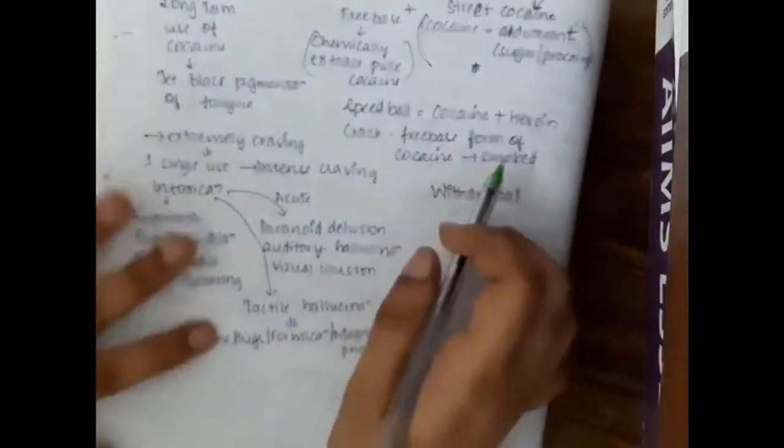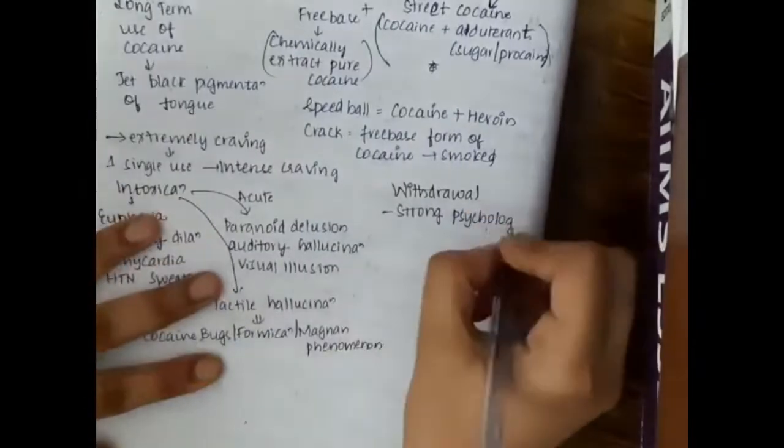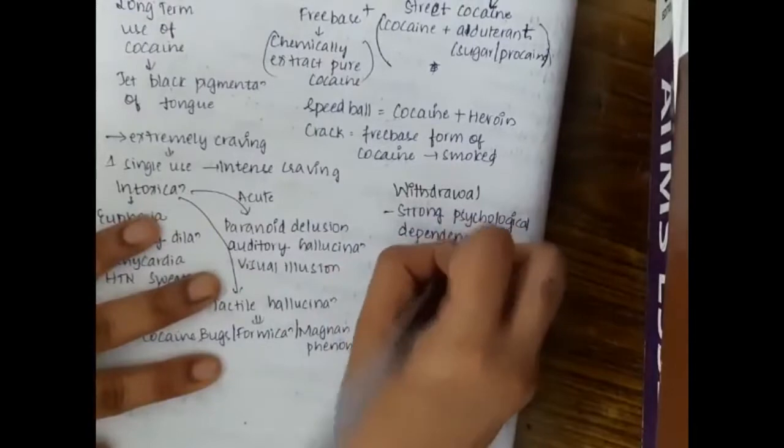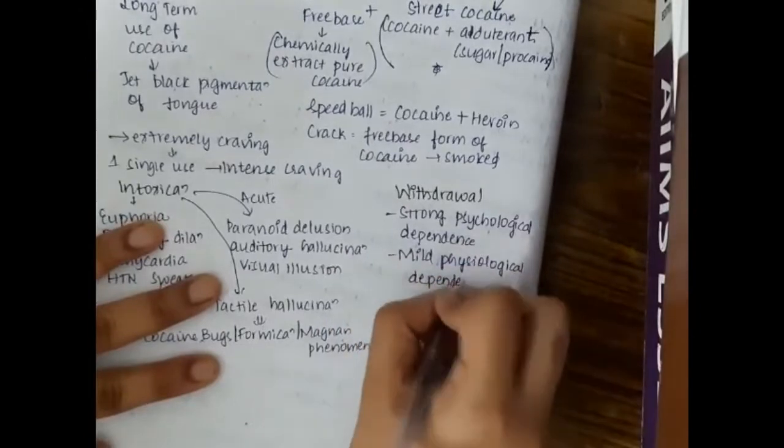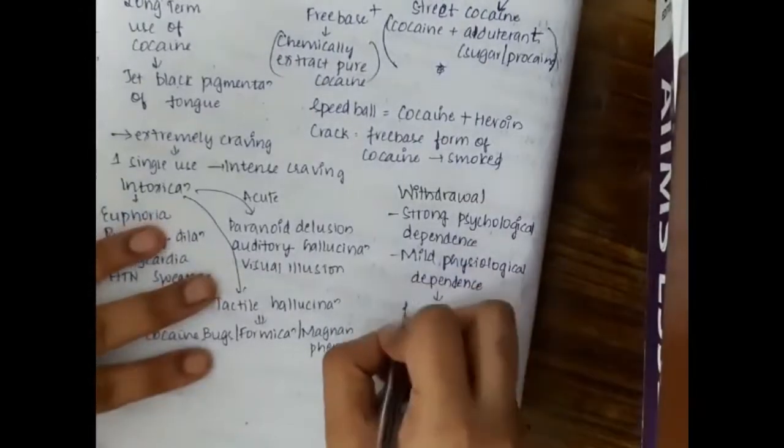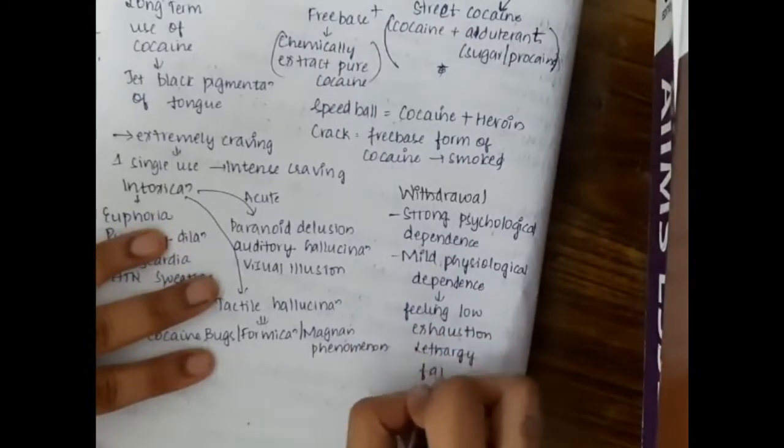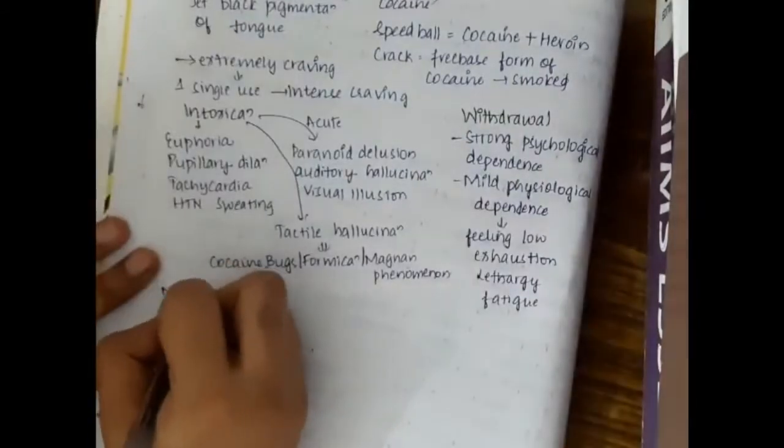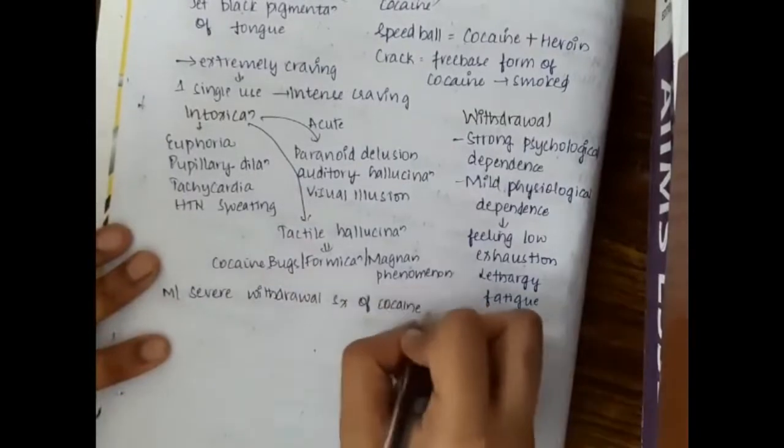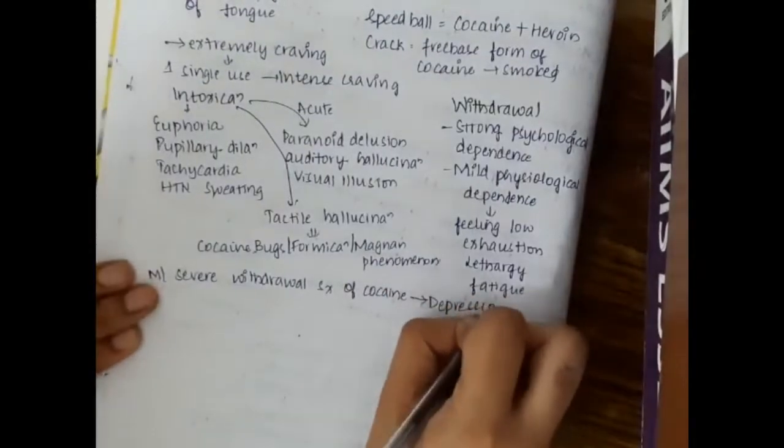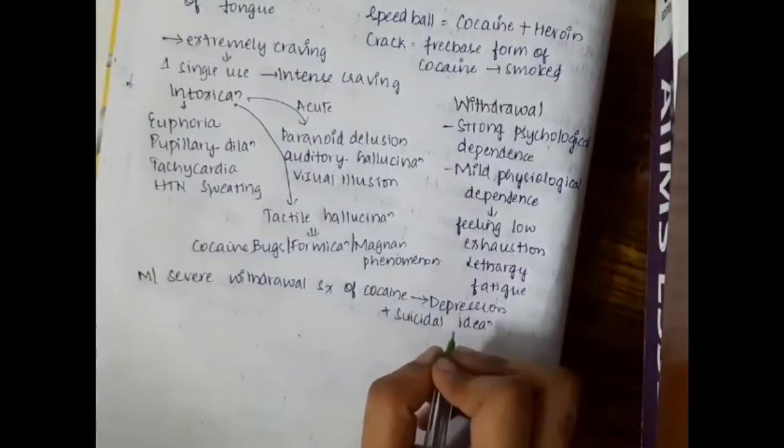For withdrawal symptoms, strong psychological dependence is seen for cocaine. Mild psychological dependence is also seen. The patient has feeling low, exhaustion, lethargy and fatigue. The most severe withdrawal symptom of cocaine is depression and suicidal ideation.